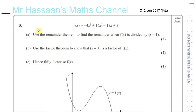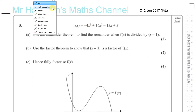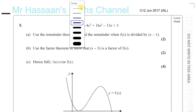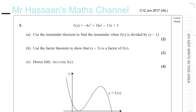Now we have C12, June 2017, IAL, question number 5. It says here: use the remainder theorem to find the remainder when f of x is divided by x minus 1.